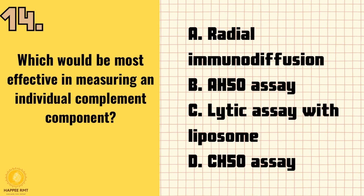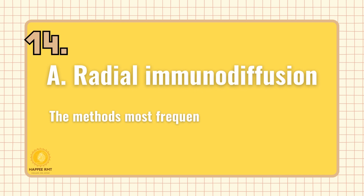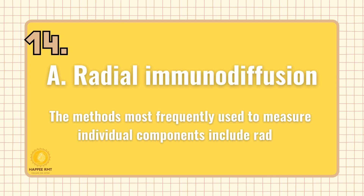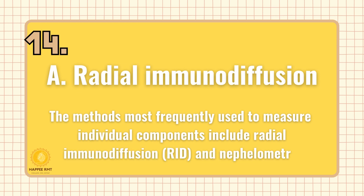Number 14. Which would be most effective in measuring an individual complement component? A. Radial immunodiffusion. B. AH50 assay. C. Lytic assay with liposome. D. CH50 assay. Answer is A: Radial immunodiffusion. The methods most frequently used to measure individual components include radial immunodiffusion (RID) and nephelometry.